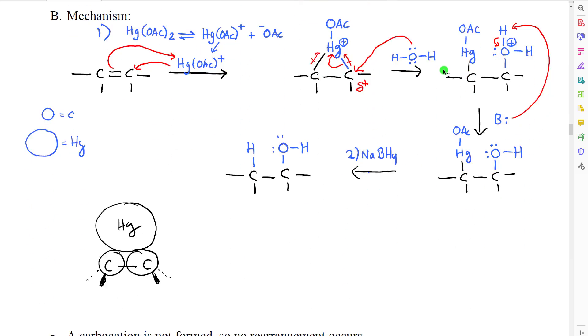Our mechanism is much more complex. In the first step of the mechanism, the mercury-2 acetate actually partially dissociates to give mercury-2 monoacetate with a positive charge and then a molecule of acetate ion. The mercury-2 monoacetate then reacts with the alkene.